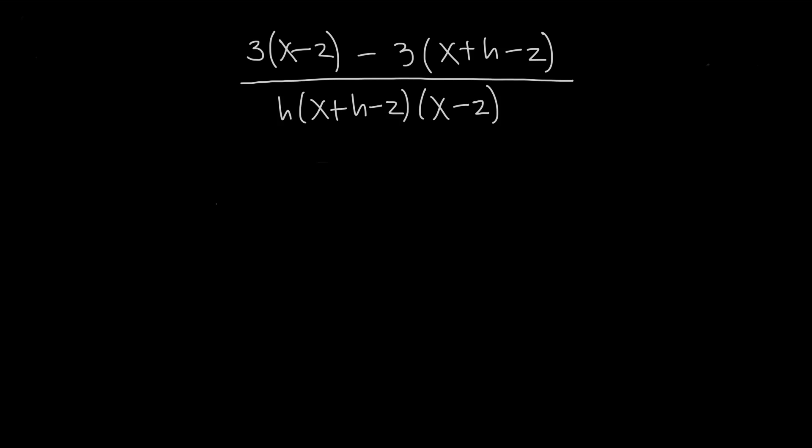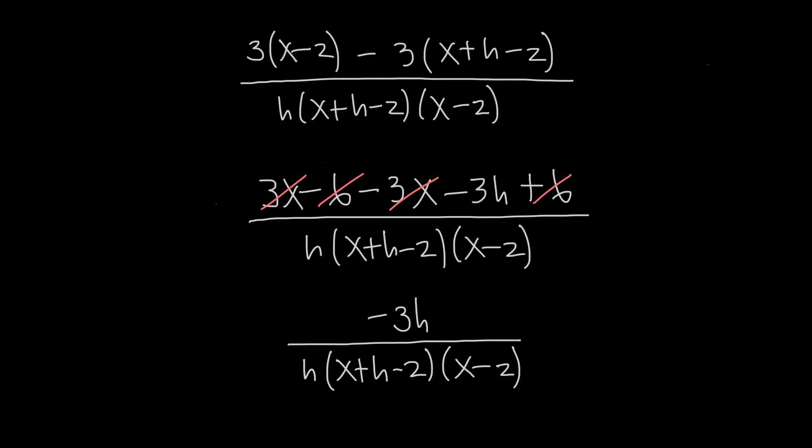Now we can simplify the numerator by multiplying everything out and then canceling terms. Finally, we'll cancel out the h from the numerator and denominator. That'll be our final answer, and that's how you use the difference quotient with fractions.